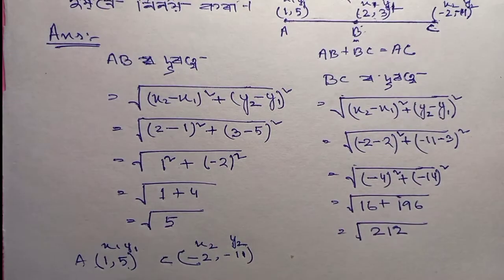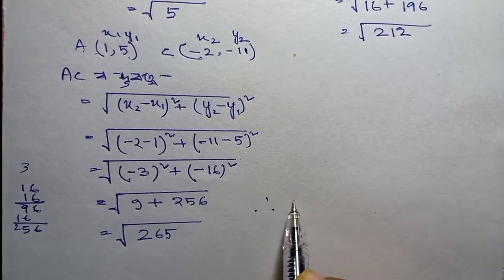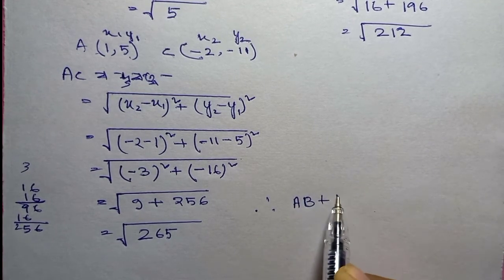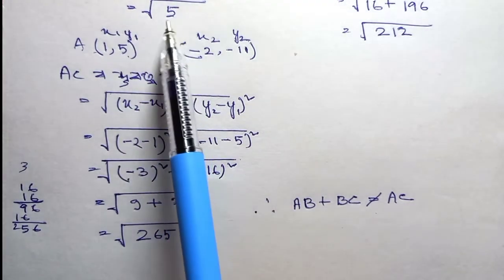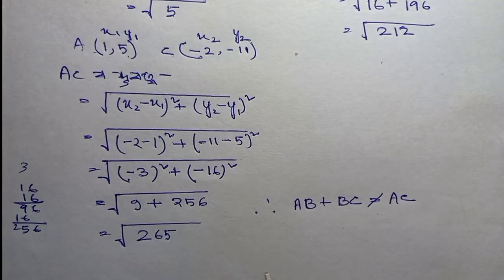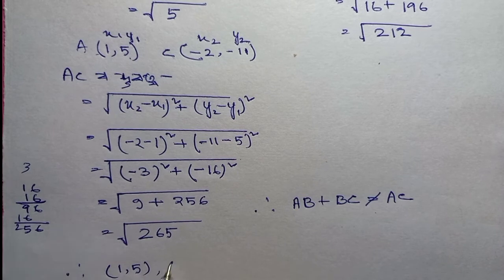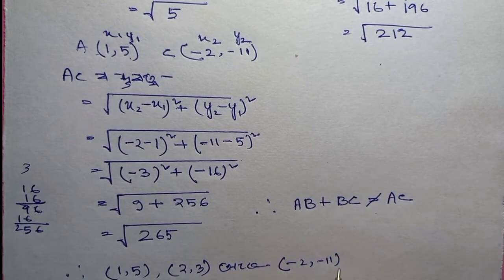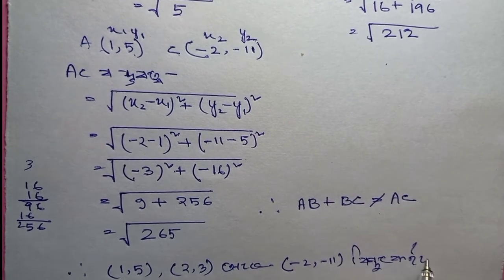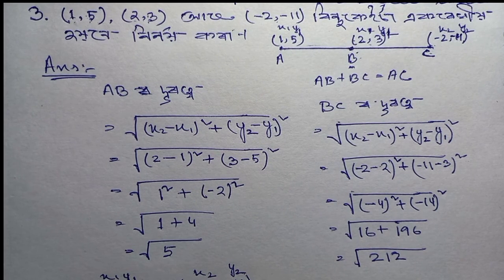BC distance is root 5. AB is also root 5. So these distances are equal, which concludes the answer.